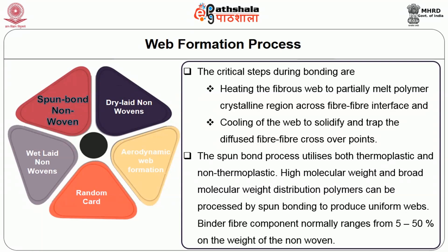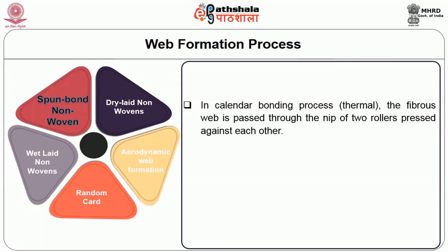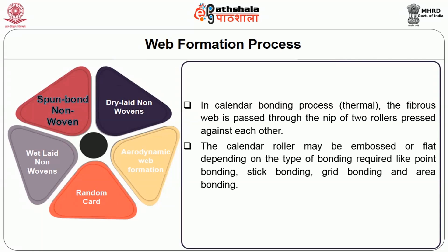The spun-bond process utilizes both thermoplastic and thermoset or non-thermoplastic blends containing carrier fibers and binder fibers. High molecular weight and broad molecular weight distribution polymers can be processed by spun-bonding to produce uniform webs. Binder filament components normally range from 5% to 50% on the weight of the nonwoven. In the thermal calendar bonding process, the fibrous web is passed through the nip of two rollers pressed against each other. The calendar roller may be embossed or flat depending on the type of bonding required — like point bonding, stick bonding, grid bonding or area bonding.